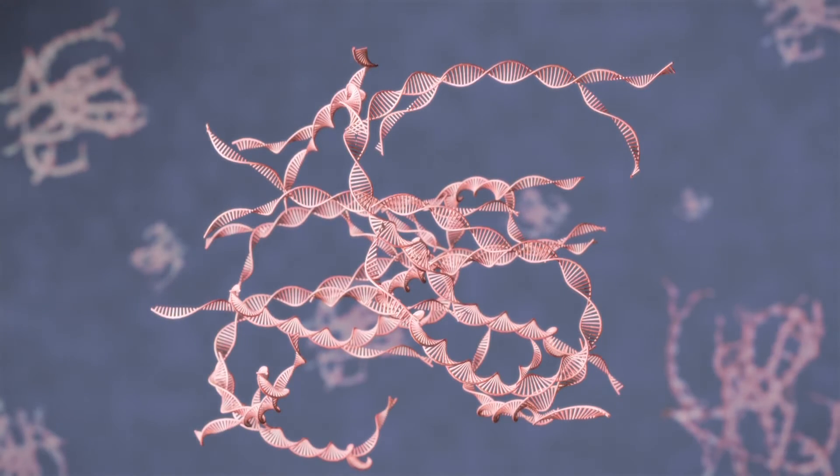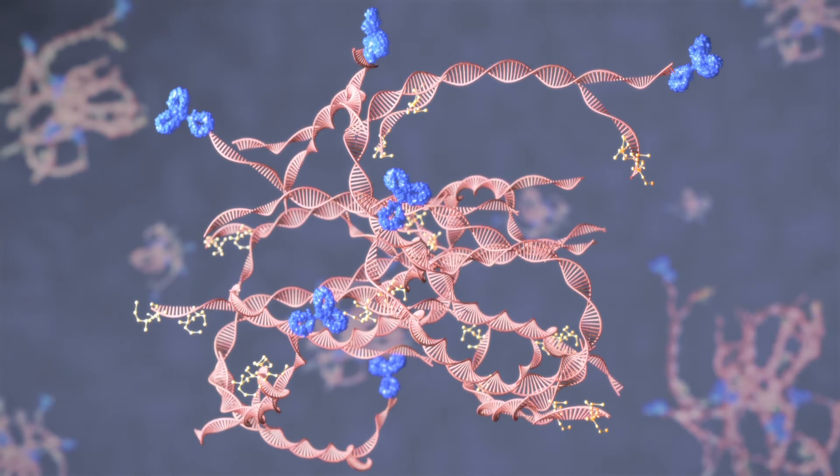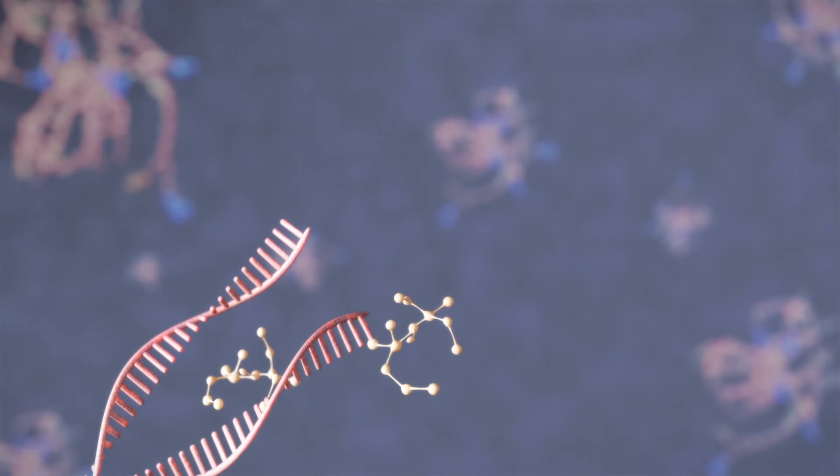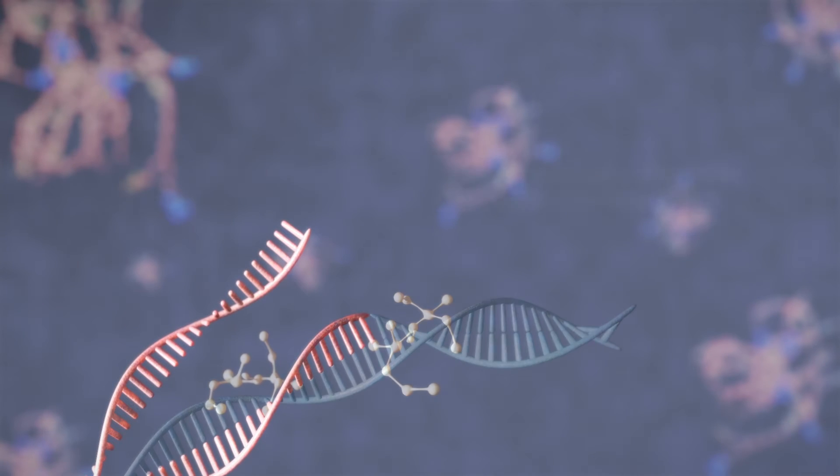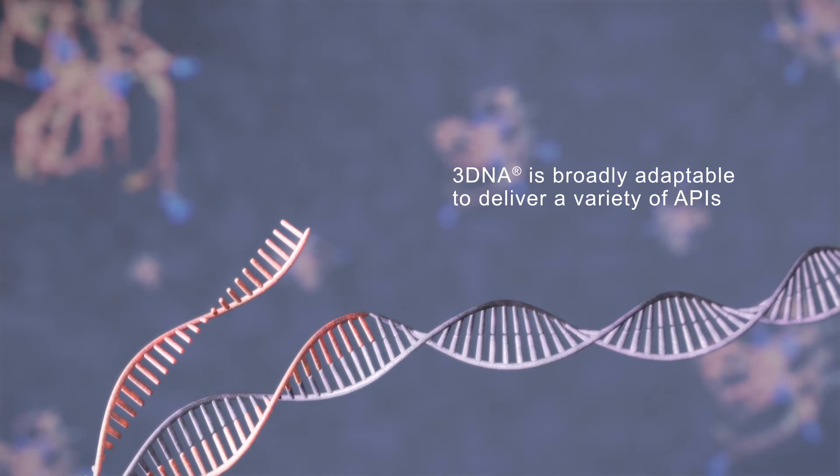And because its design is modular, targeting moieties and drug cargo can both be optimized independently. A variety of chemistries can be used to load small molecules on the 3DNA nanocarrier. Simple hybridization can be used to deliver siRNA, mRNA, and linearized plasmid DNA with 3DNA.